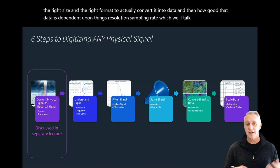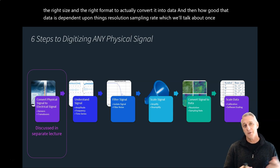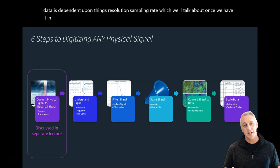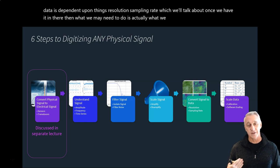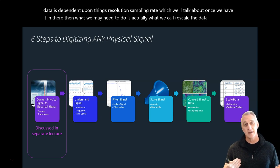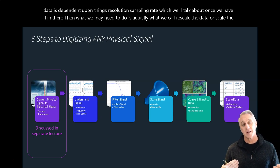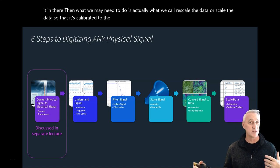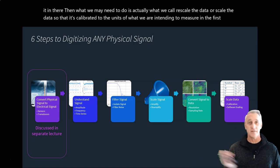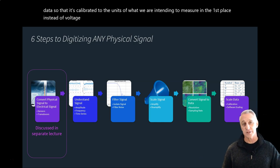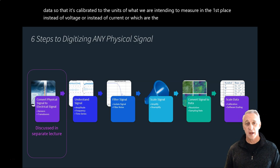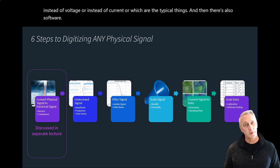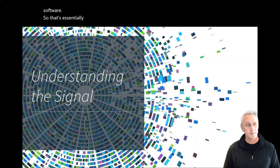Once we have the data, we may need to rescale it so it's calibrated to the units of what we're intending to measure — instead of voltage or current, which are the typical raw outputs. There's also software scaling involved. That's essentially what we're going to talk about today.